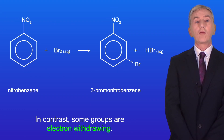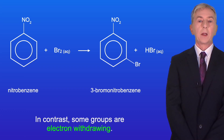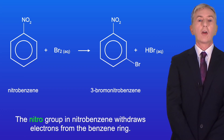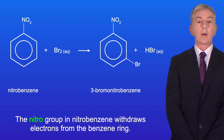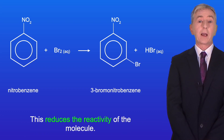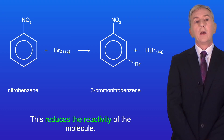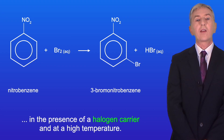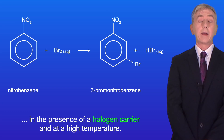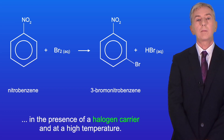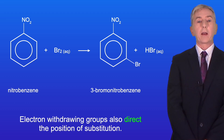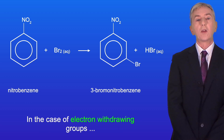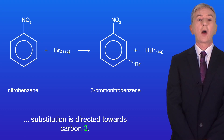In contrast, some groups are electron withdrawing. The nitro group in nitrobenzene withdraws electrons from the benzene ring, which reduces the reactivity of the molecule. For example, nitrobenzene will only react with bromine in the presence of a halogen carrier and at a high temperature. Electron withdrawing groups also direct the position of substitution — in the case of electron withdrawing groups, substitution is directed towards carbon 3.